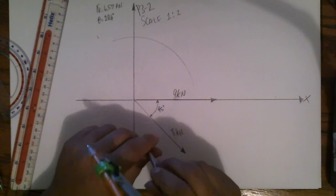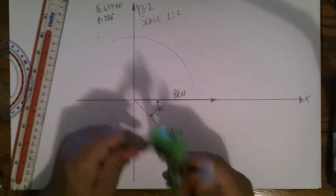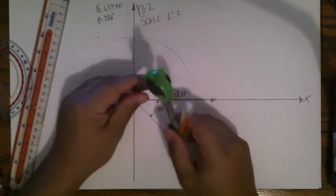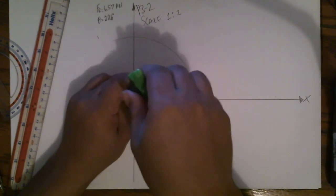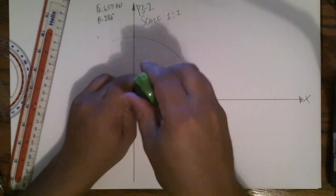Take the protractor. Place the protractor at the origin. Adjust the protractor until the other end is aligned with the tip of the 8 kilonewton vector.